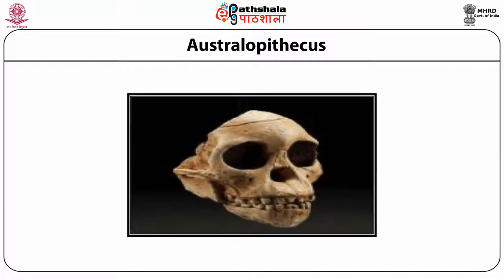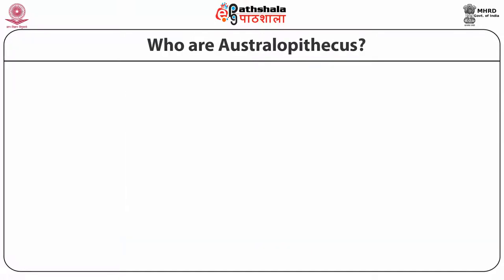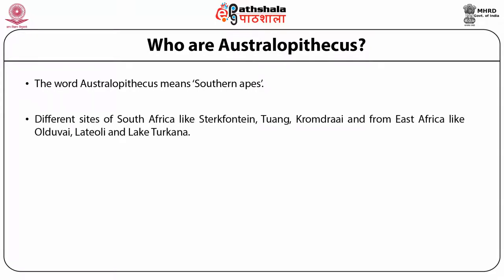Australopithecus are southern apes. The fossils of this genus have been found from four million years ago or might be even before. It has a spectrum of varieties, all of which are extinct. The members of these groups were biped with reduced teeth size, especially the canine. These two characteristic features place the group in the hominid category. It is believed that one of the species of the genus Australopithecus evolved into Homo. The fossils of this genus have been found from different sites of South Africa and East Africa.